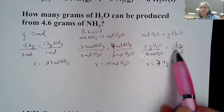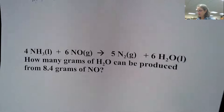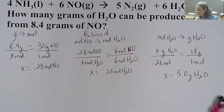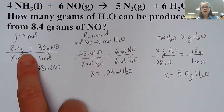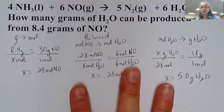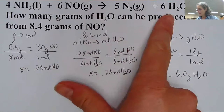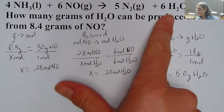Try the next one — it's the same steps with different numbers and formulas from the balanced equation. You should have ended with 5.0 grams of water from 8.4 grams of NO. Use the molar mass of NO to convert to moles, then use the balanced equation. It just so happens that both NO and water have a coefficient of 6, so the mole ratio is 1-to-1. Then convert moles back to grams. All gram-to-gram problems follow this pattern — just different balanced equations and molar masses.